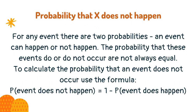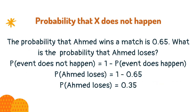For any event, there are two probabilities: an event can happen or not happen. The probability that these events do or do not occur are not always equal. For example, the sun can either rise or not rise, however it is much more likely that it will. The probability that Ahmed wins a match is 0.65. What is the probability that Ahmed loses?